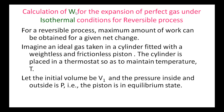Next topic is calculation of work done for the expansion of a perfect gas under isothermal conditions for reversible process. Consider a reversible process. In a reversible process, maximum amount of work can be obtained for a given net change. So imagine an ideal gas taken in a cylinder fitted with a weightless and frictionless piston. The cylinder is placed in a thermostat so as to maintain constant temperature for isothermal process. Let the initial volume of the gas be V1, and the pressure inside and outside will be P, so that the piston is in the equilibrium state.